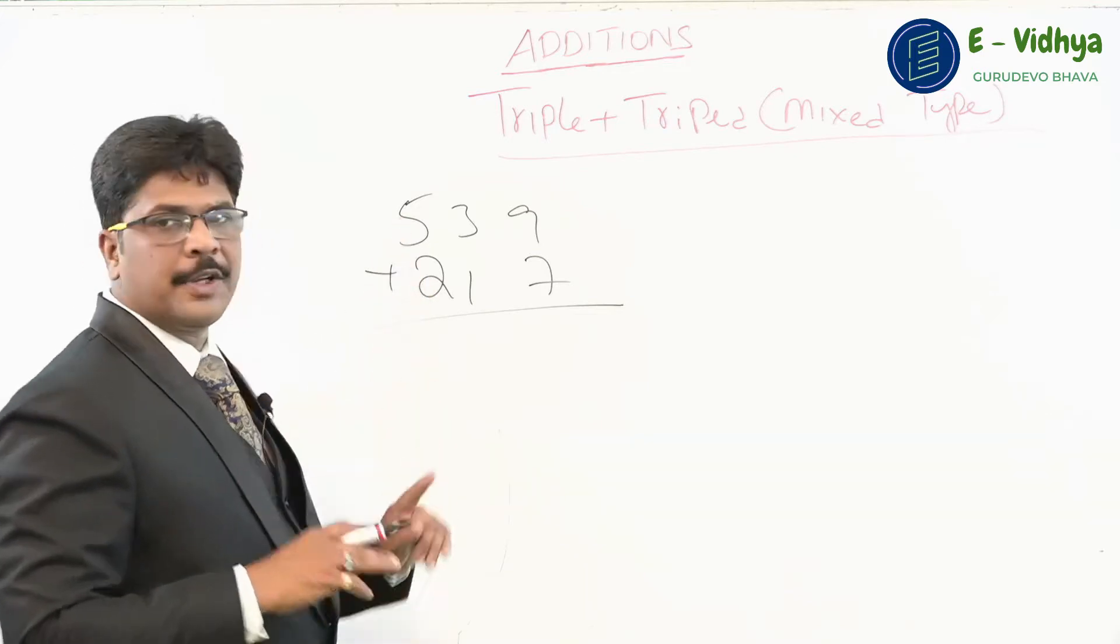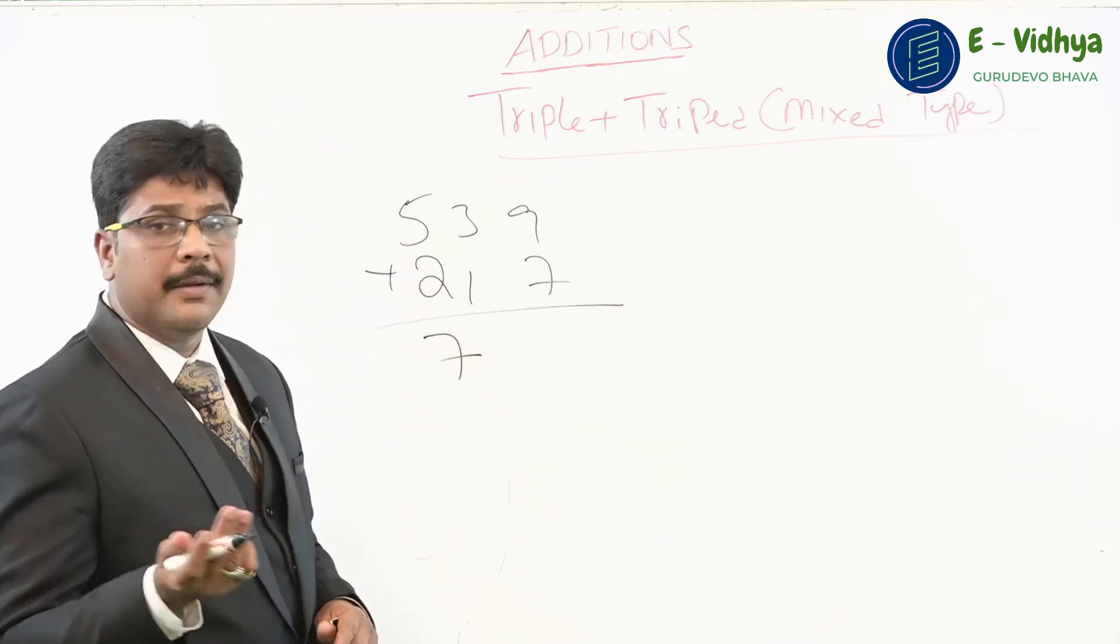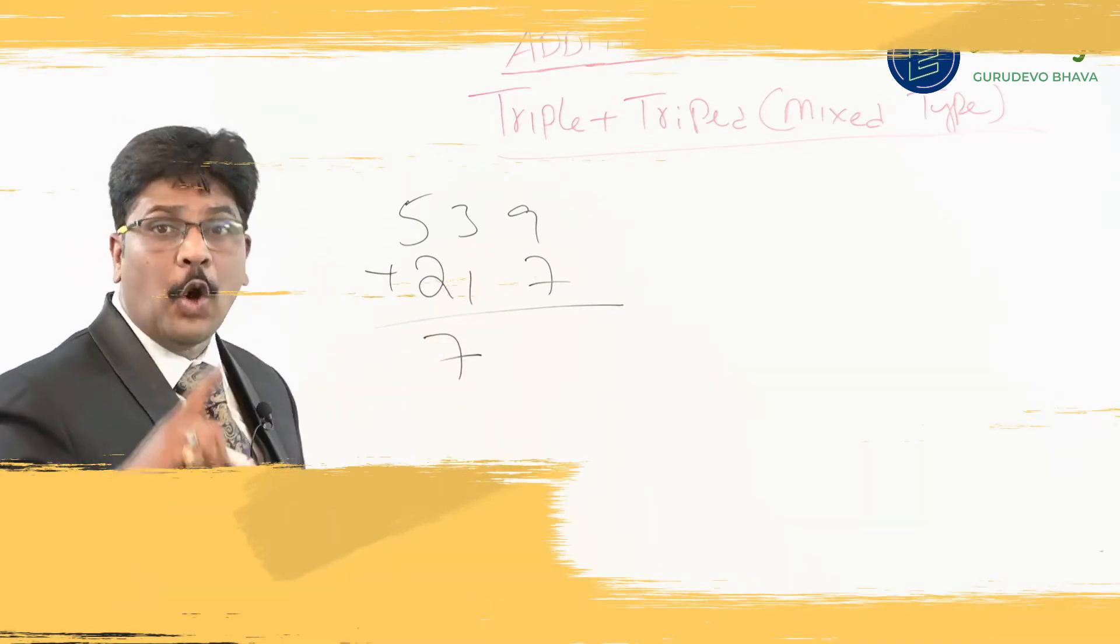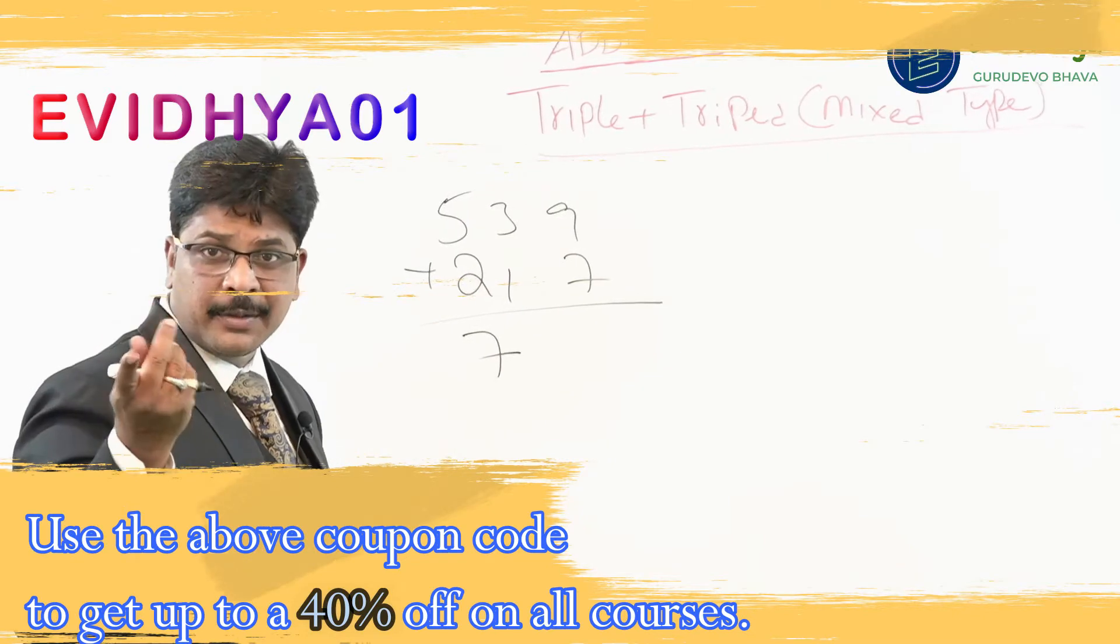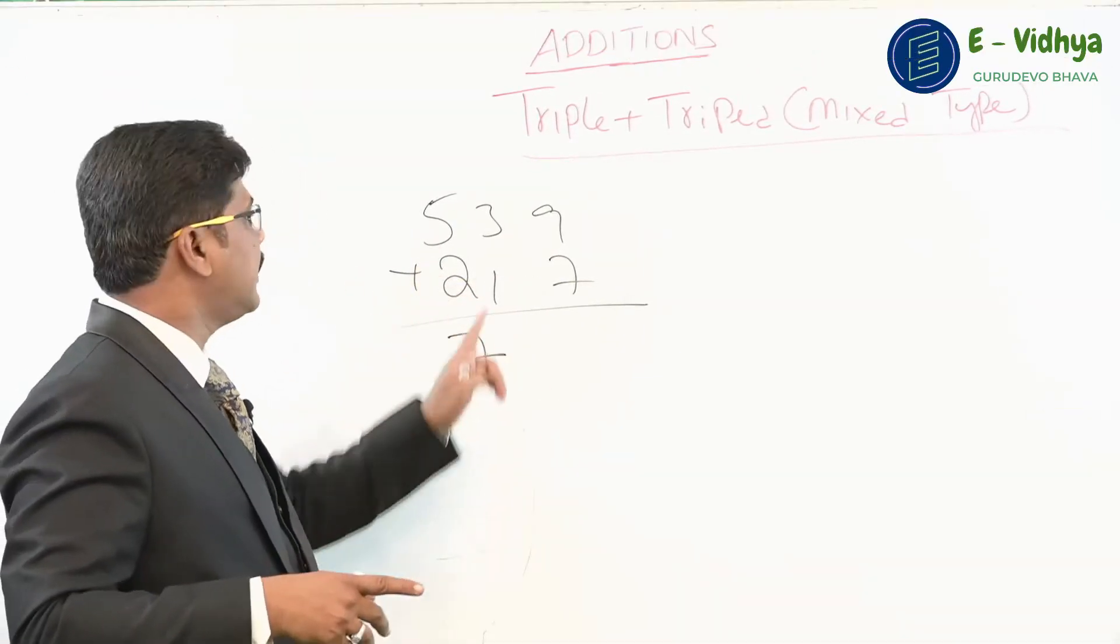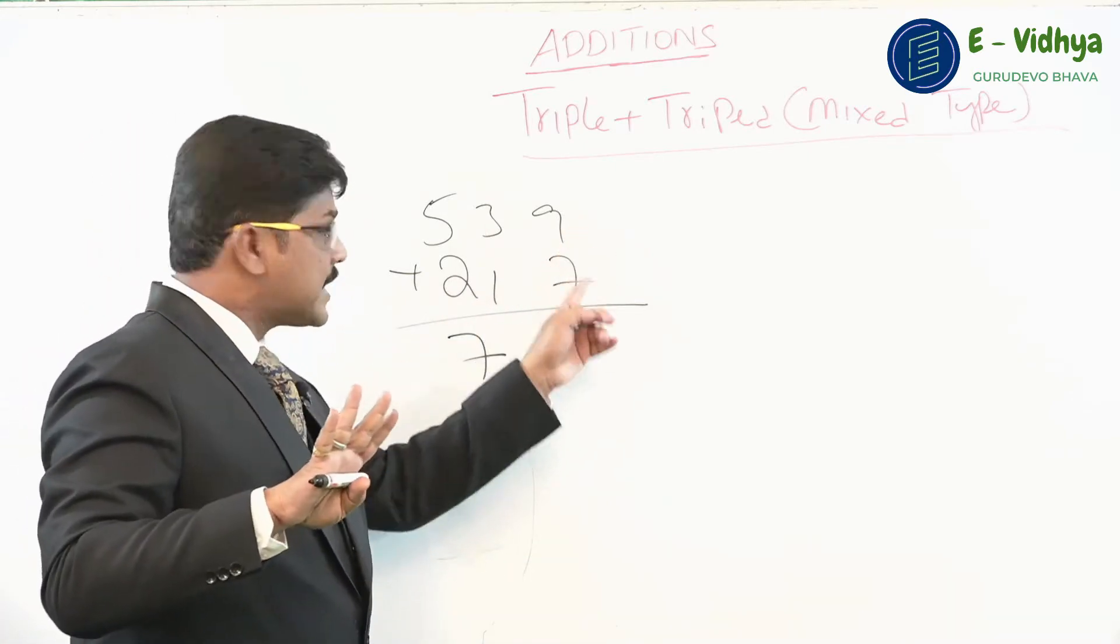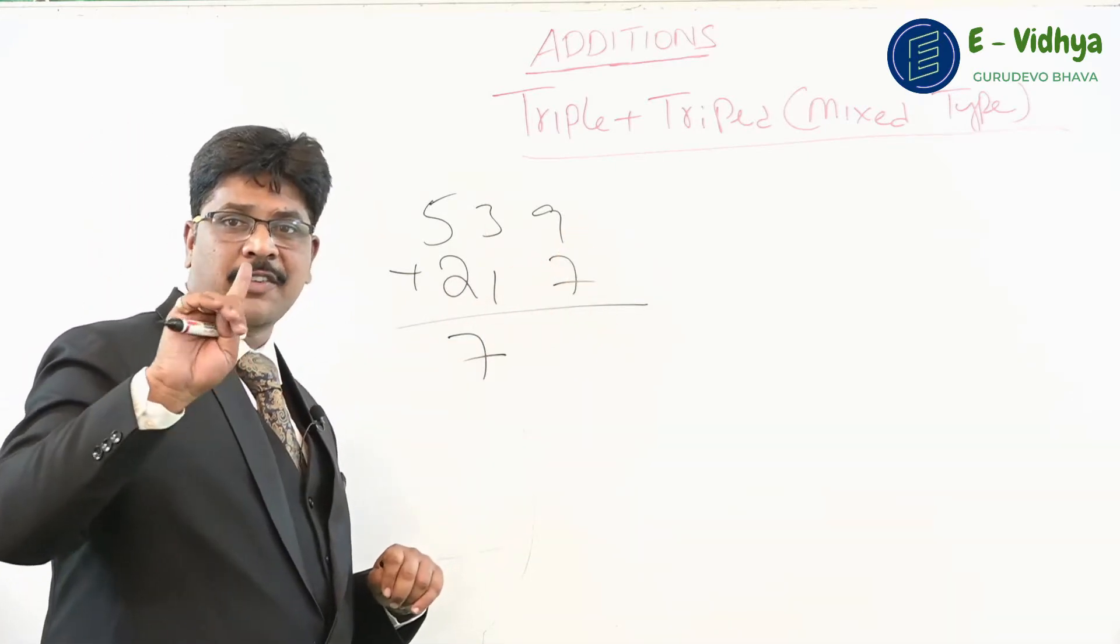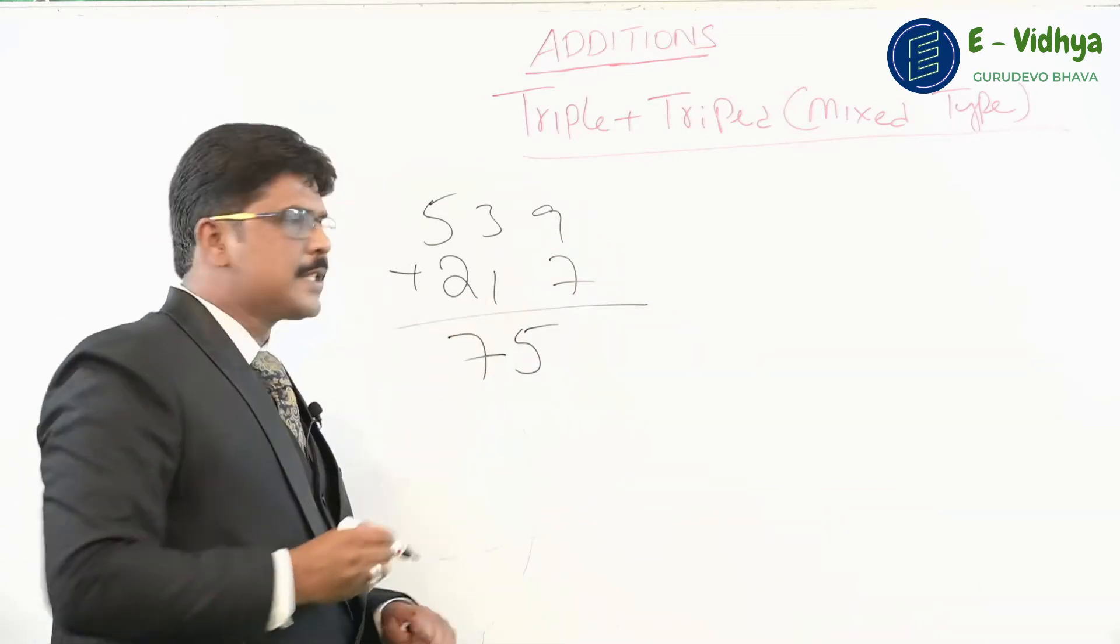Add 5 plus 3, get 7. Write 7 only, don't write 8. Why? Because when you observe the next place there is a non-carry number. You must only increase the number when you get a carry number. But here we got a non-carry number, so 5 plus 7, put 7 only. Now add 3 plus 1, it's 4, but next place is a carry, so we increase one number more, 4 becomes 5.